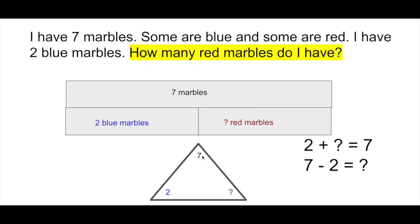The reason why that works is we've created a fact family triangle here. There's the seven marbles. Here's the two blue marbles. And here's the mystery number of red. In a fact family, you can actually write four equations that all work with the problem. They all have a seven, a two, and a question mark.